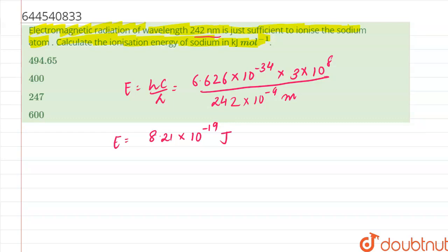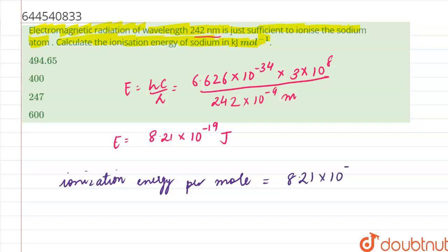Alright, so the ionization energy per mole is equal to 8.21 × 10⁻¹⁹ multiplied by Nₐ, which on calculation comes out to be 494.65 kilojoule per mole.